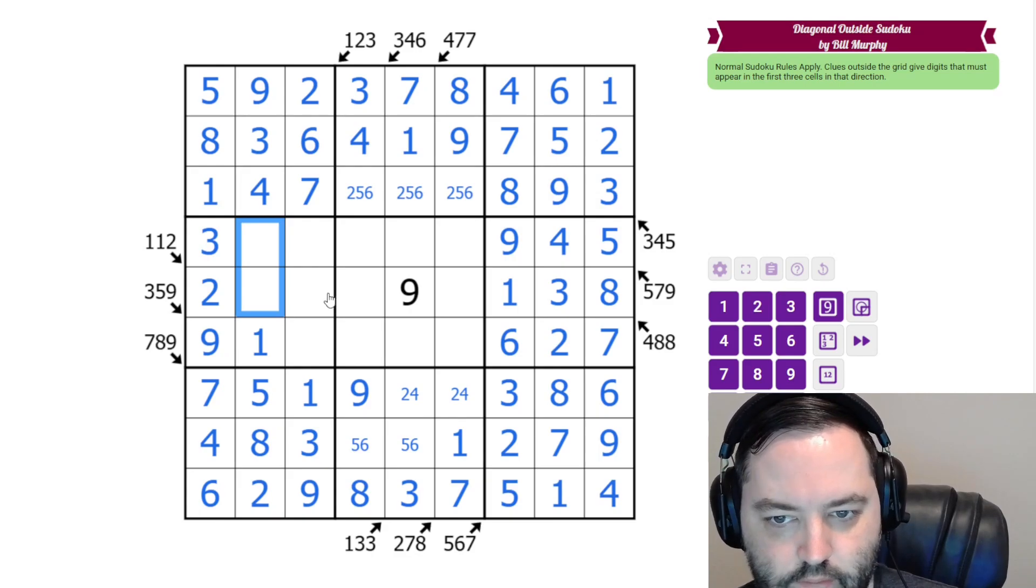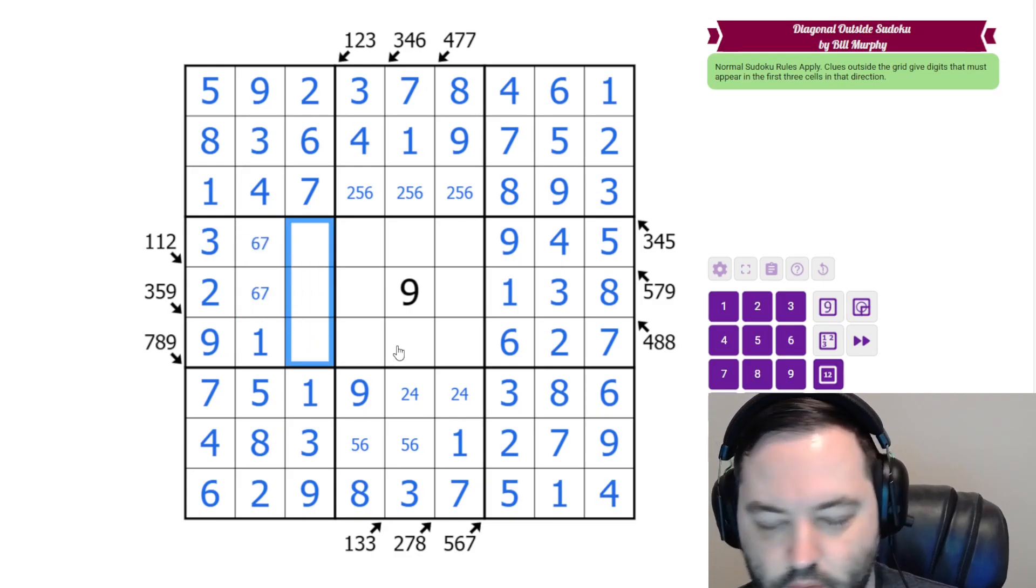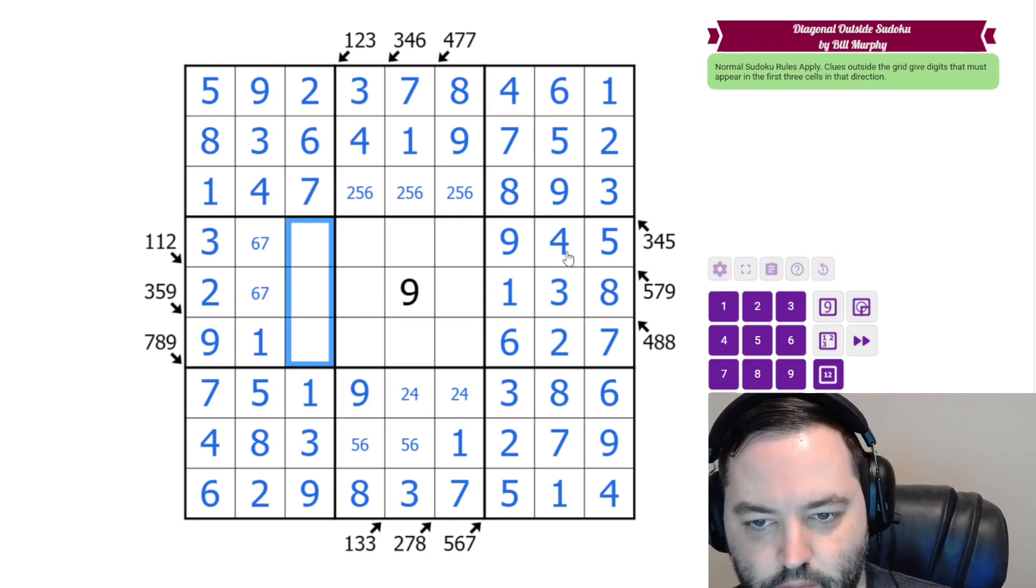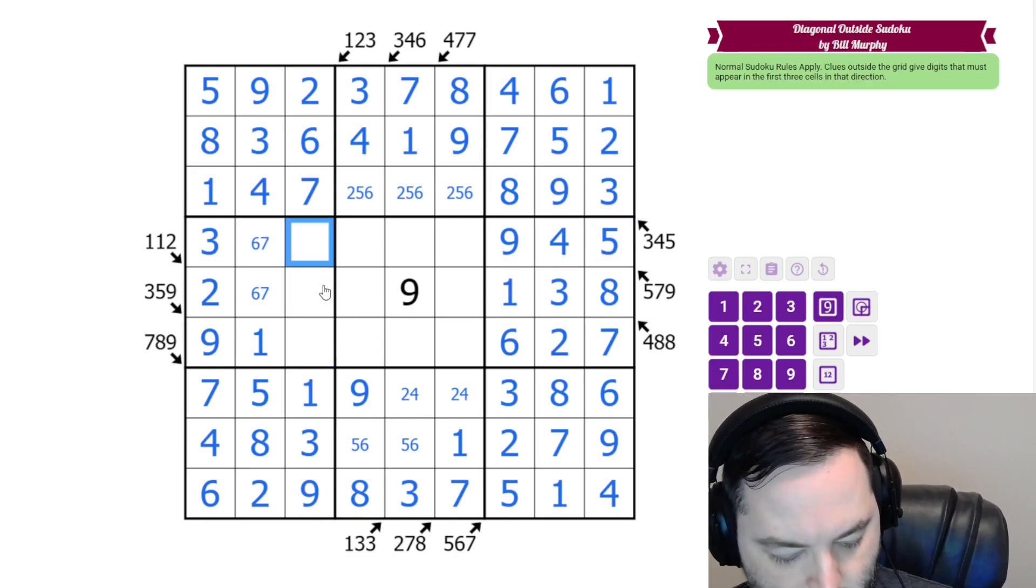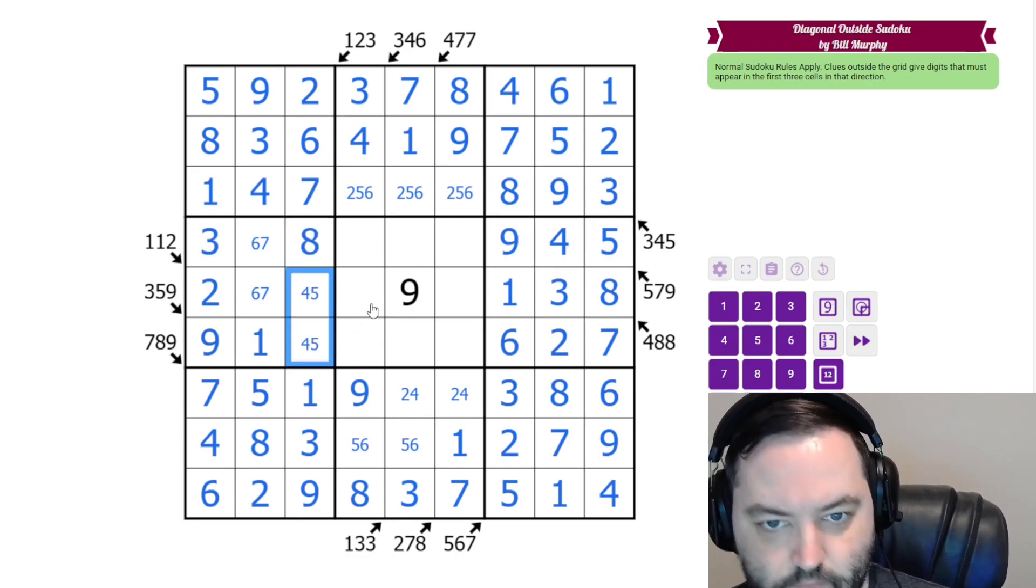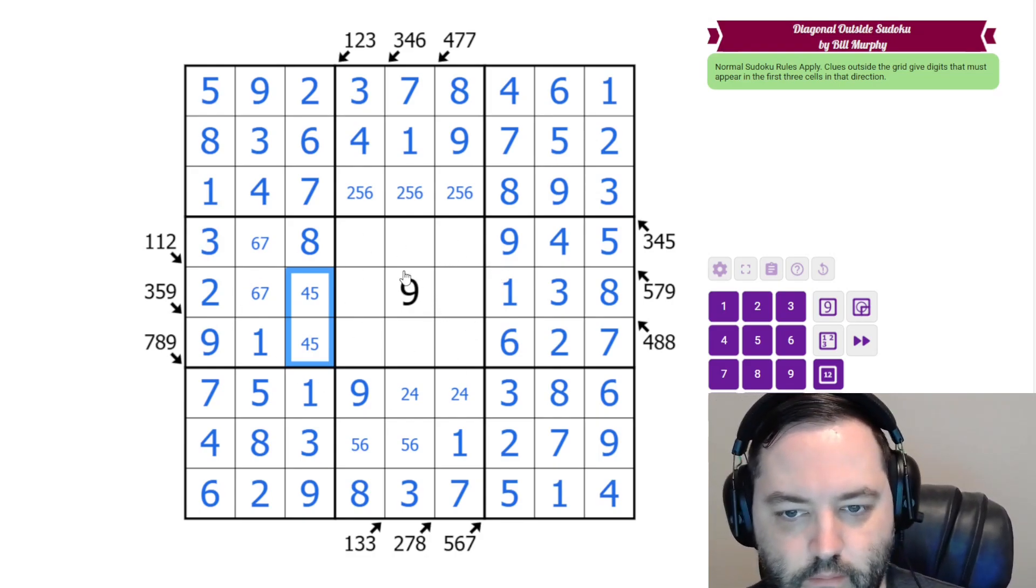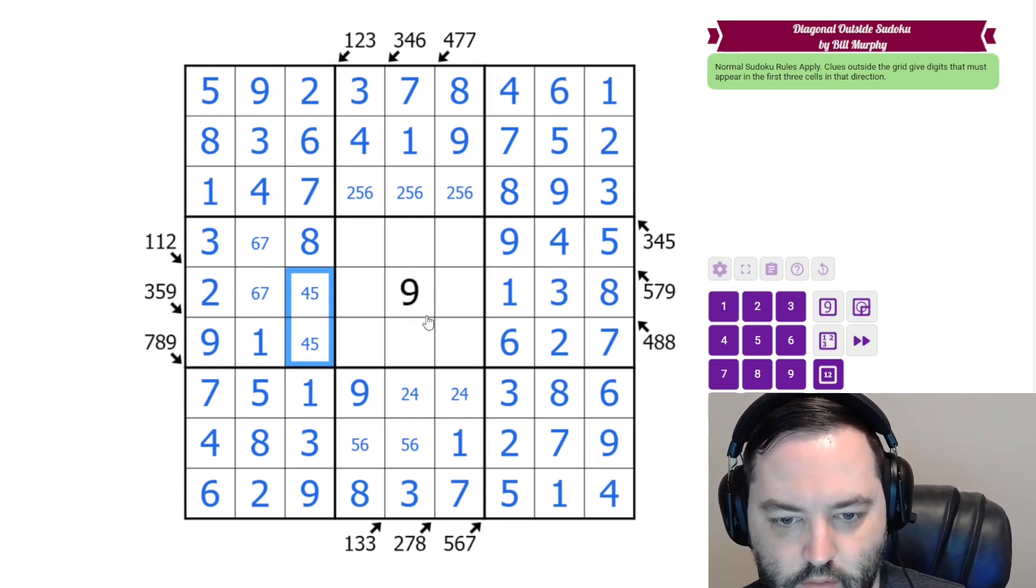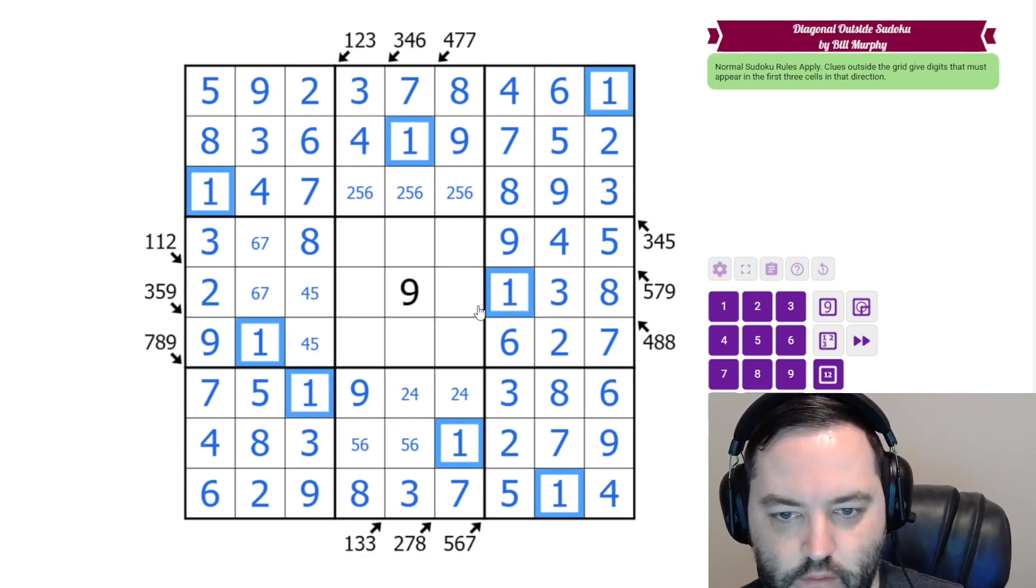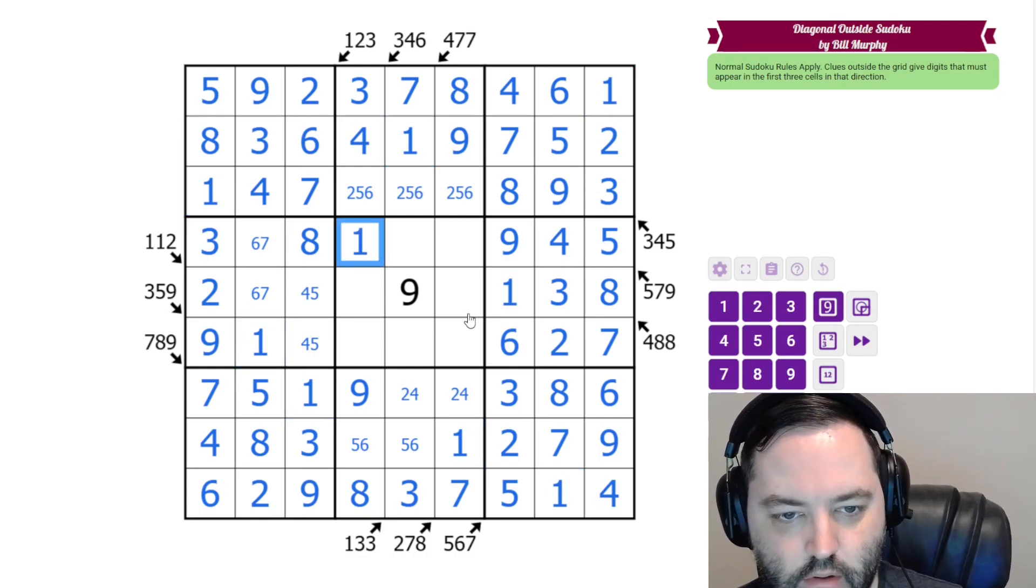These are now 6 and 7. We don't know the order of those. And these are 4, 5, 8. Place the 8. I think that's all we can do without going into the central box.